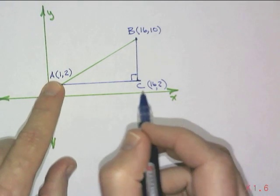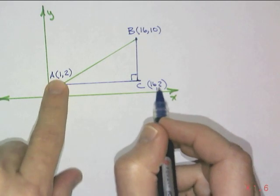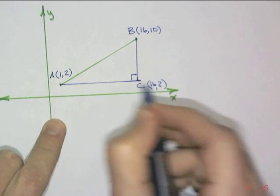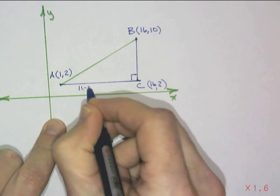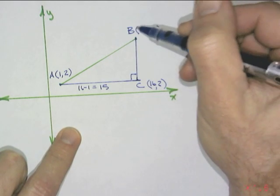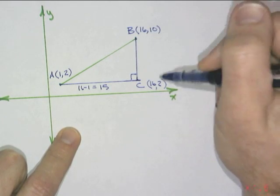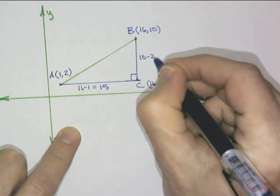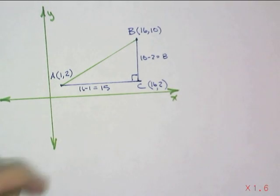From A to C would be 1 to 16. That's going to be from 1 to 16. That's just basically 16 minus 1, which equals 15. From B to C is 10 minus 2, which is 8. So, now we have two sides. We just need to solve for the third side.